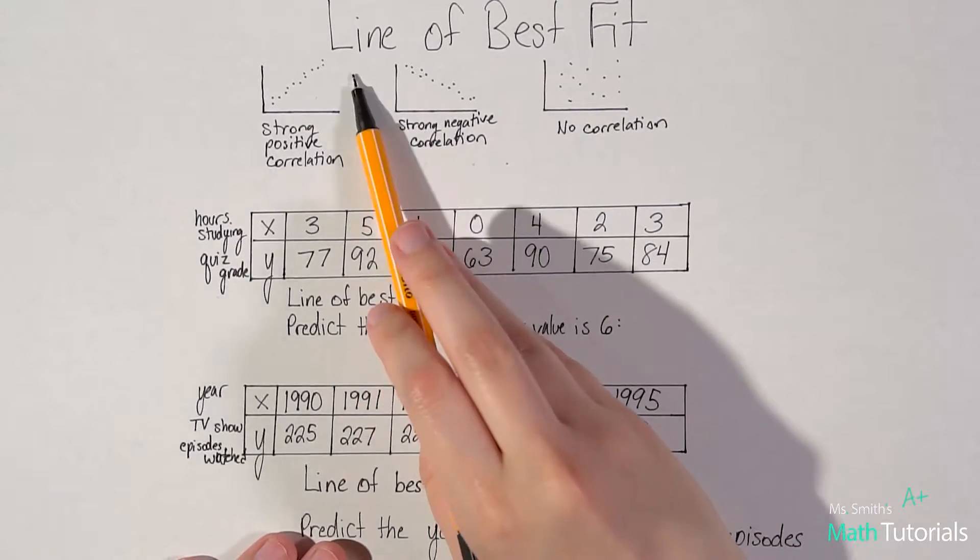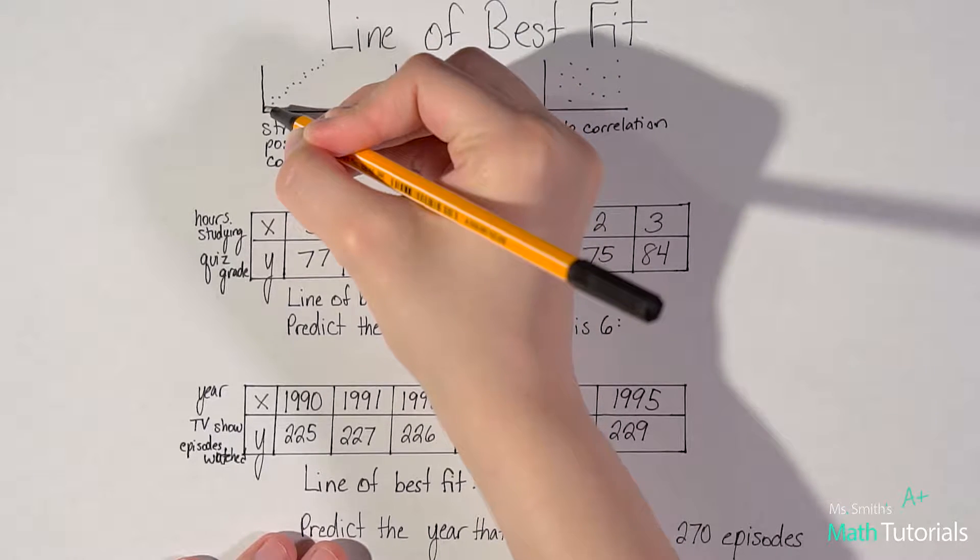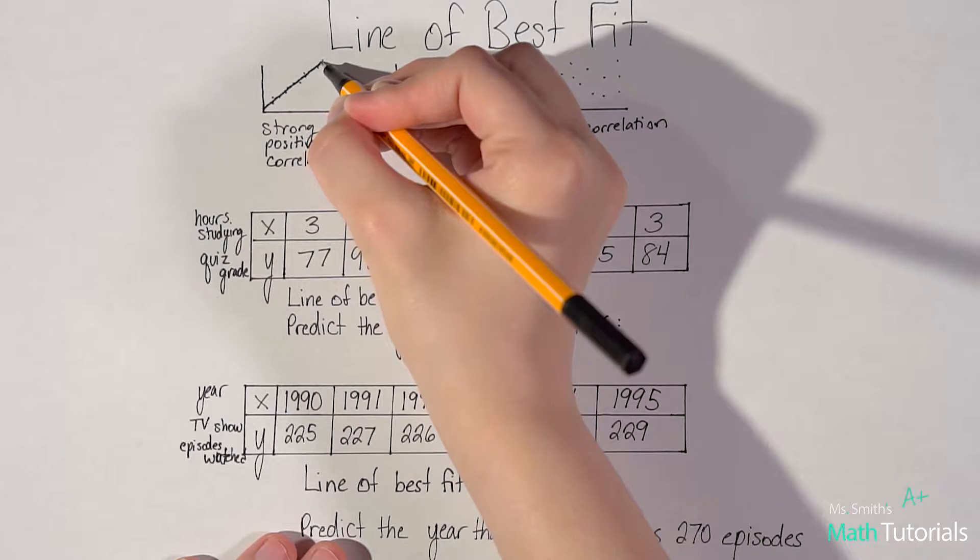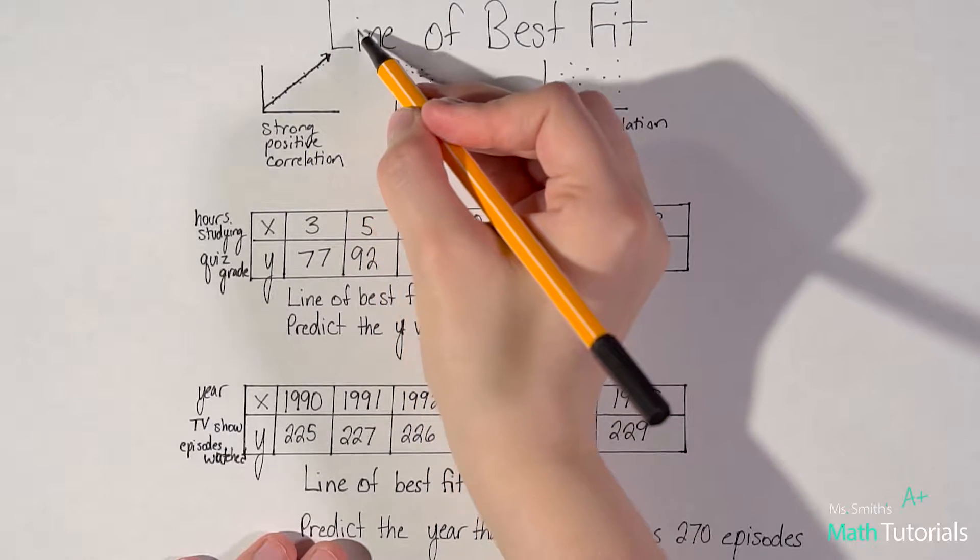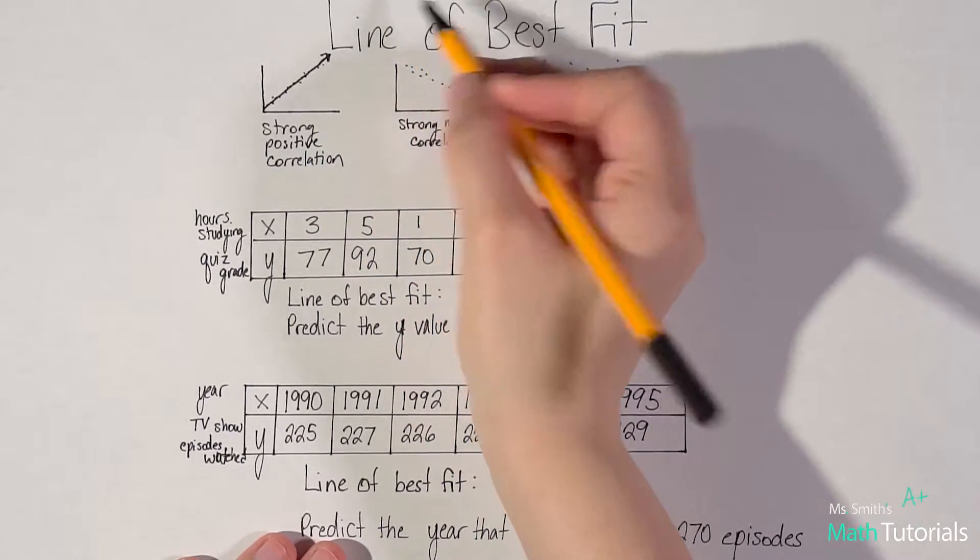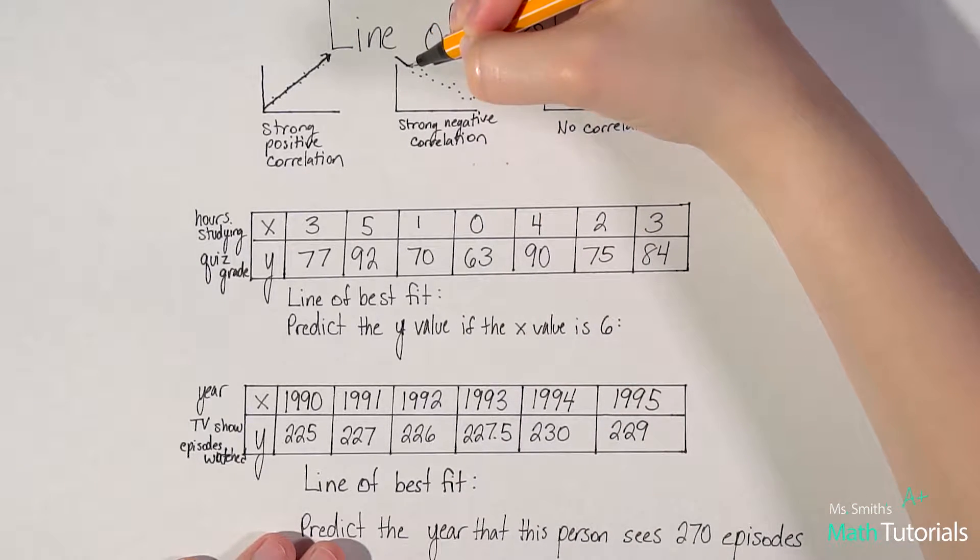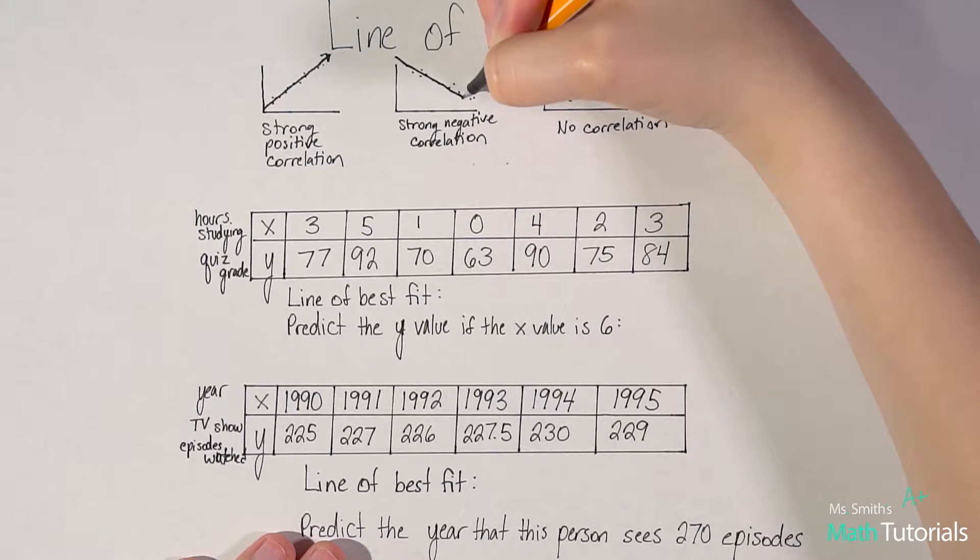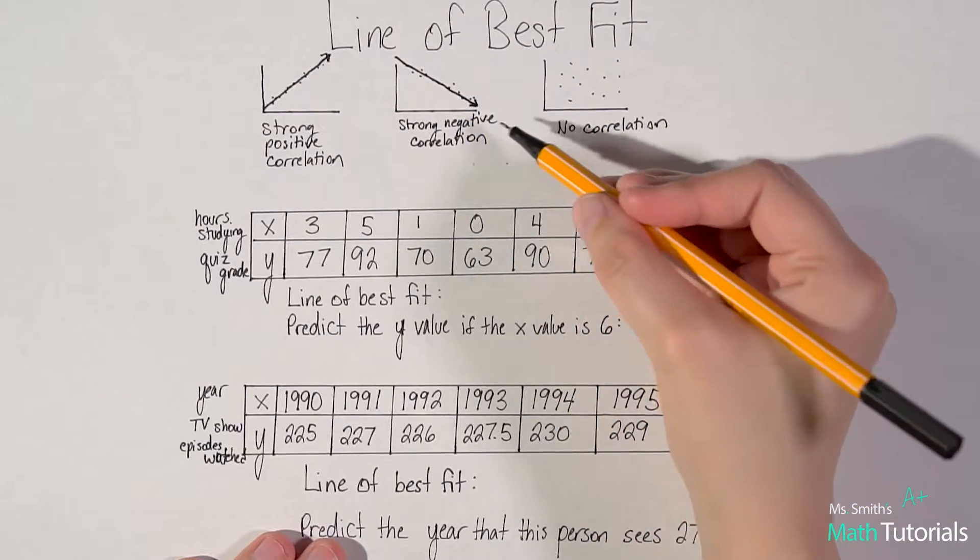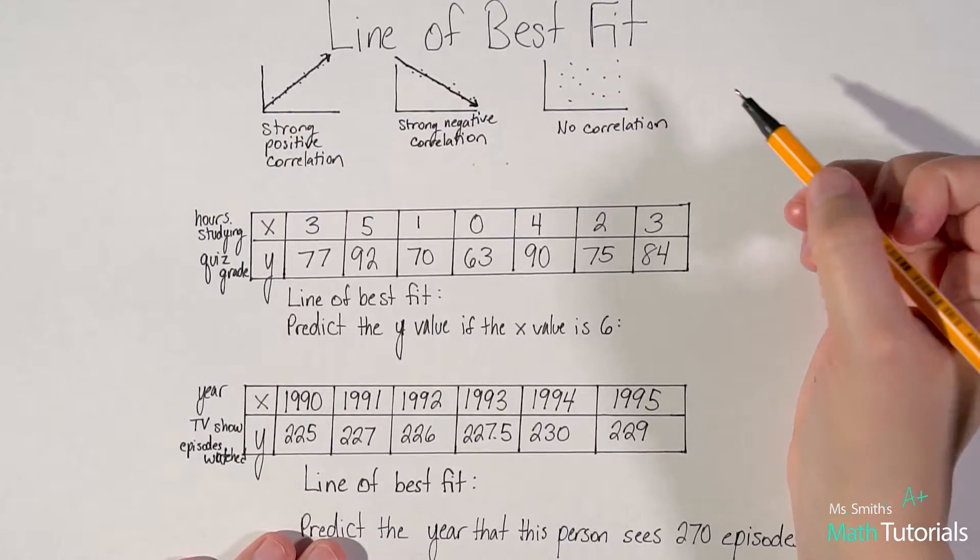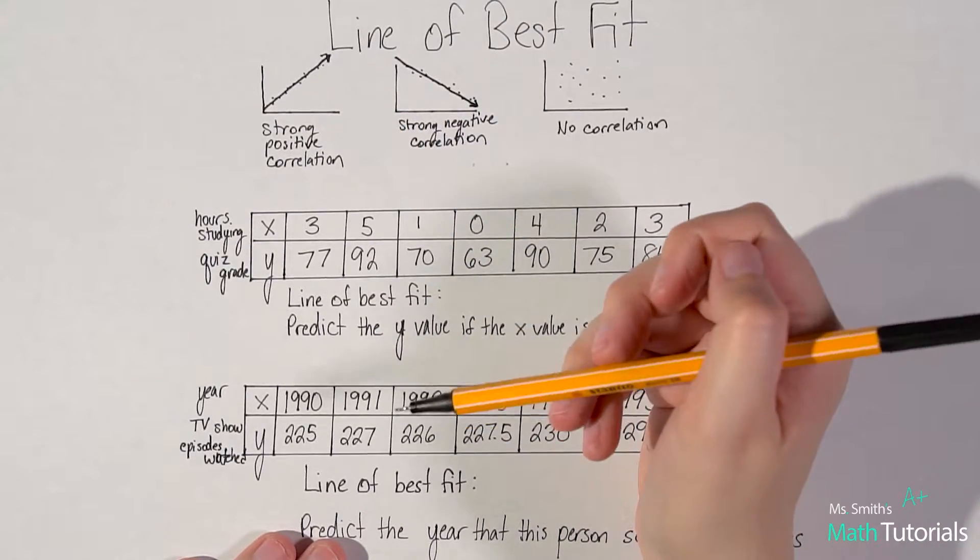When we're talking about line of best fit, I will be talking about, in this strong positive correlation, if I were to draw to the best of my ability a line that went right through those data points, that would be my line of best fit, and it would continue on. So I could predict where those data points would fall in the future.